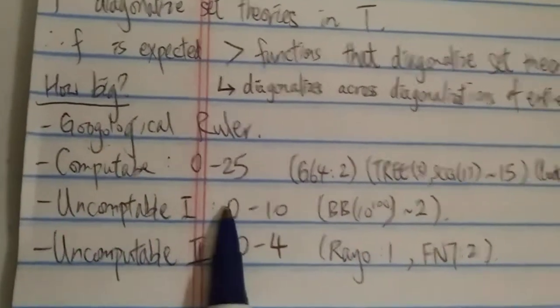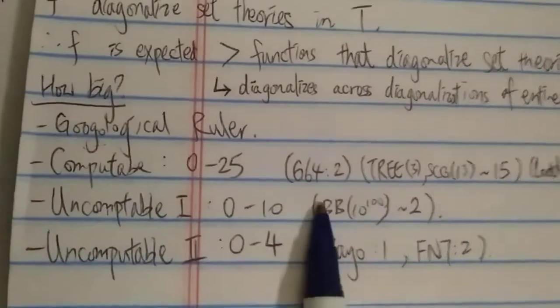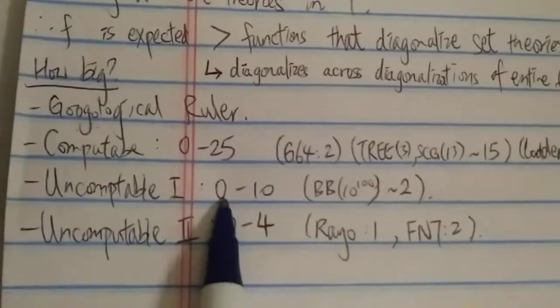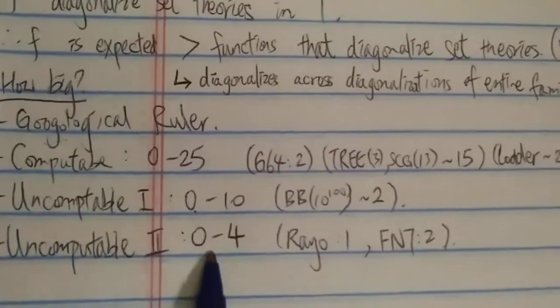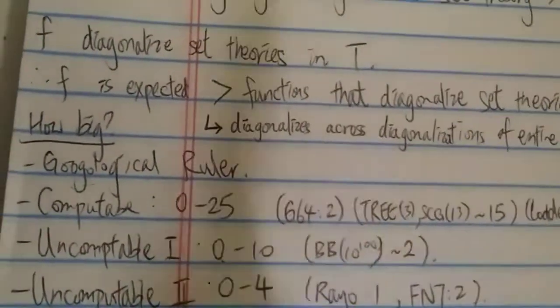So for this uncomputable one, there's zero to 10. So there are 10 levels, or 11 levels, actually, if you include the zero. And this category has zero to four levels.